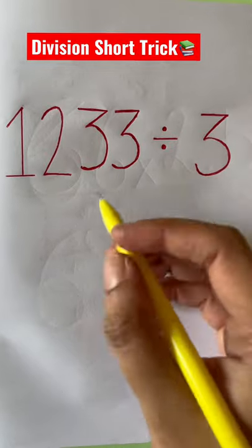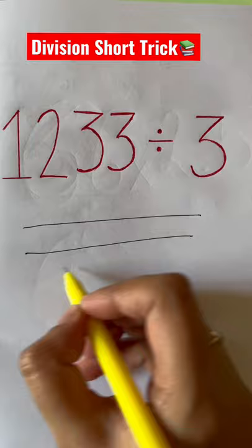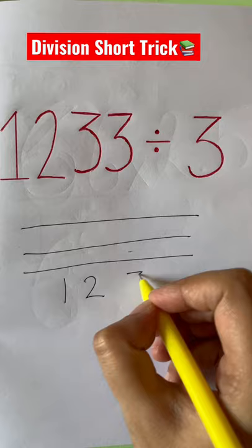1233 divided by 3. So we'll just draw lines for this 3: 1, 2, and 3. And then we are just going to write the number 1233. And now we are going to divide it to get the count the number according to this.